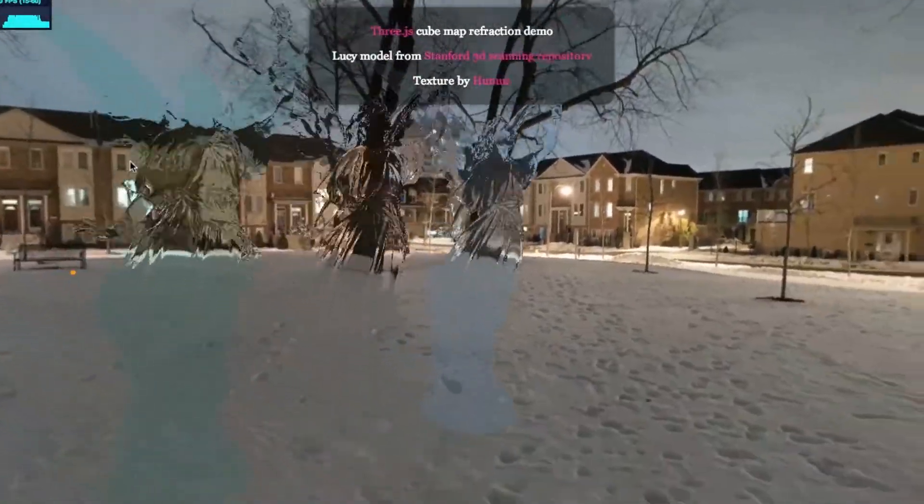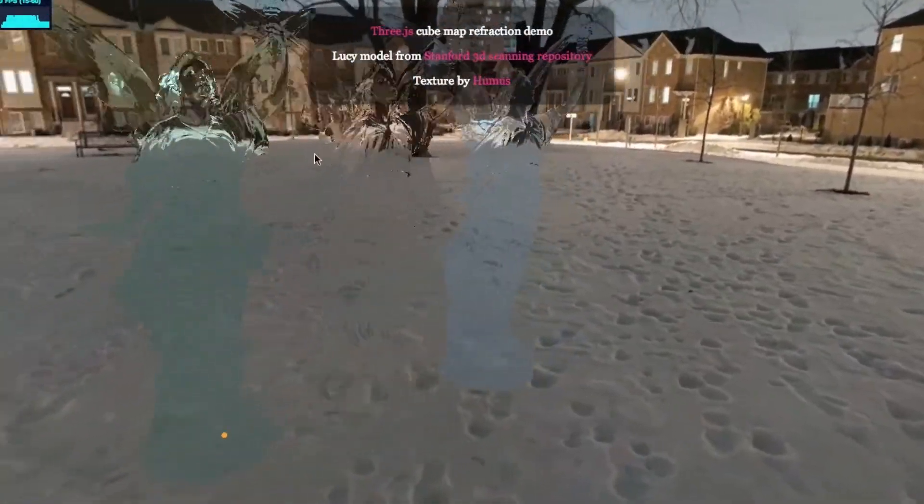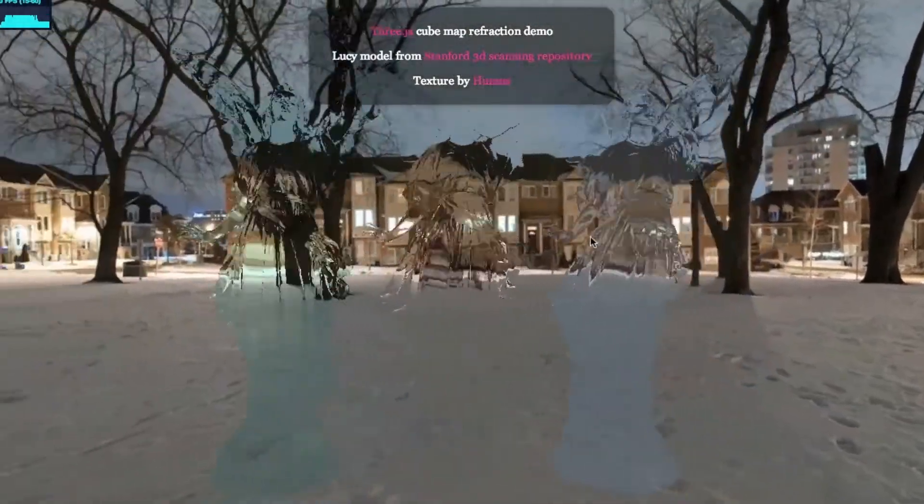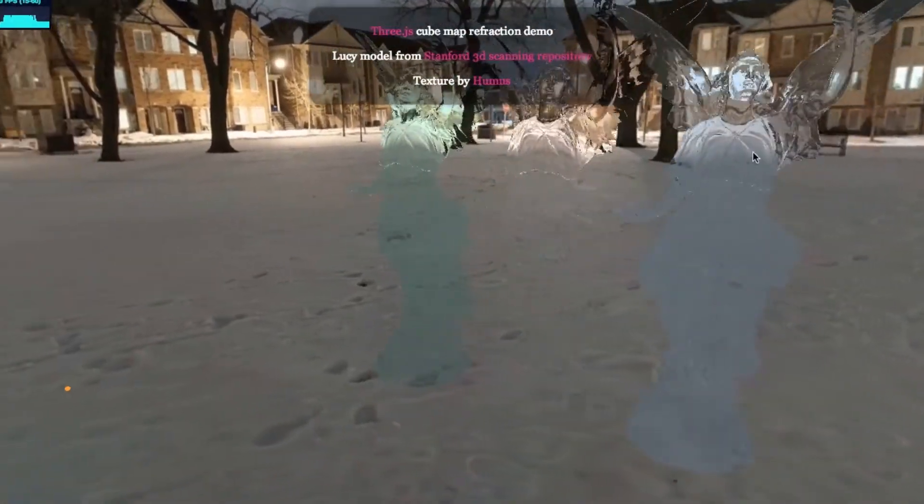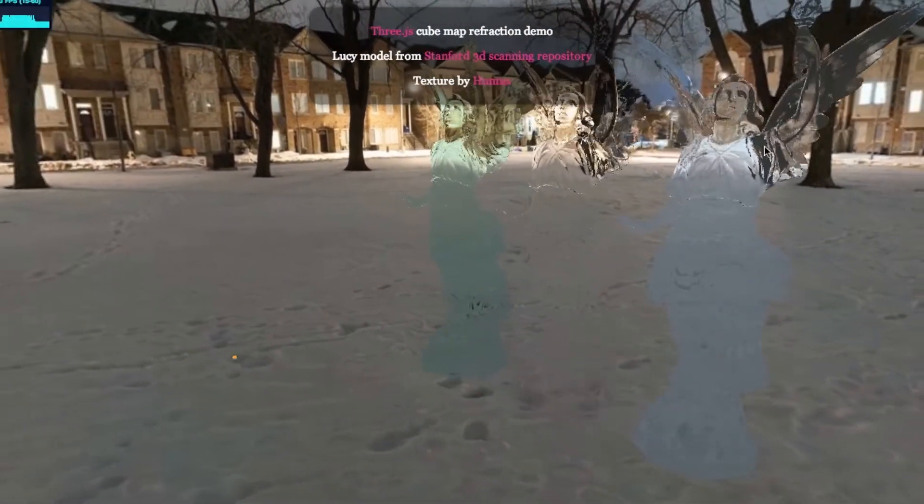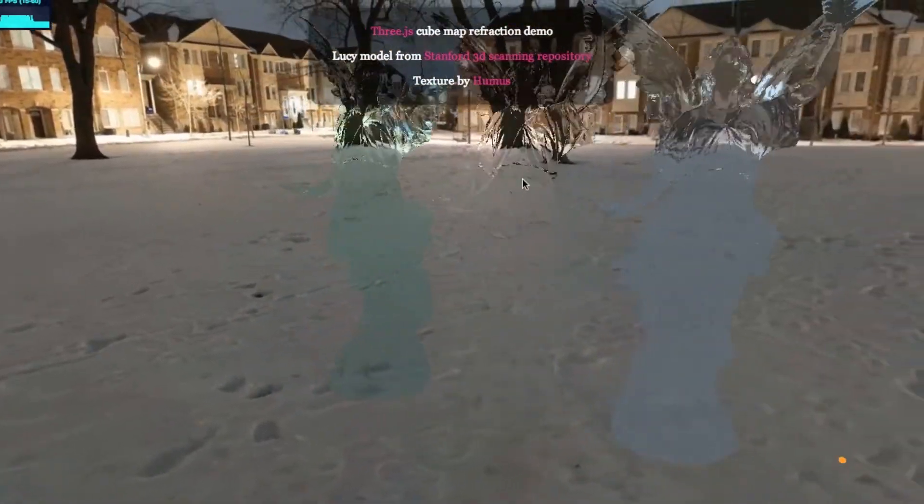Just as you can create a reflection vector to perform reflection mapping, you can also create a refraction vector and use that instead to access the environment map. This can be combined with the color of the object to get different variations of a material that looks a fair bit like glass.